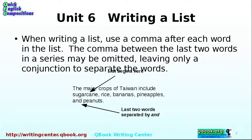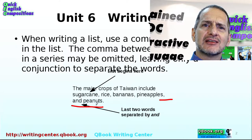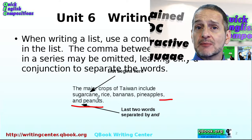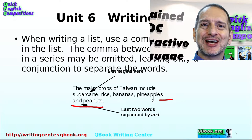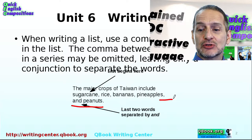Here's a very simple example: The main crops of Taiwan include sugarcane, rice, bananas, pineapples, and peanuts. The only thing to really pay attention to is the last two — pineapples and peanuts. It's using the word 'and' at the end of the list, which you're probably familiar with.